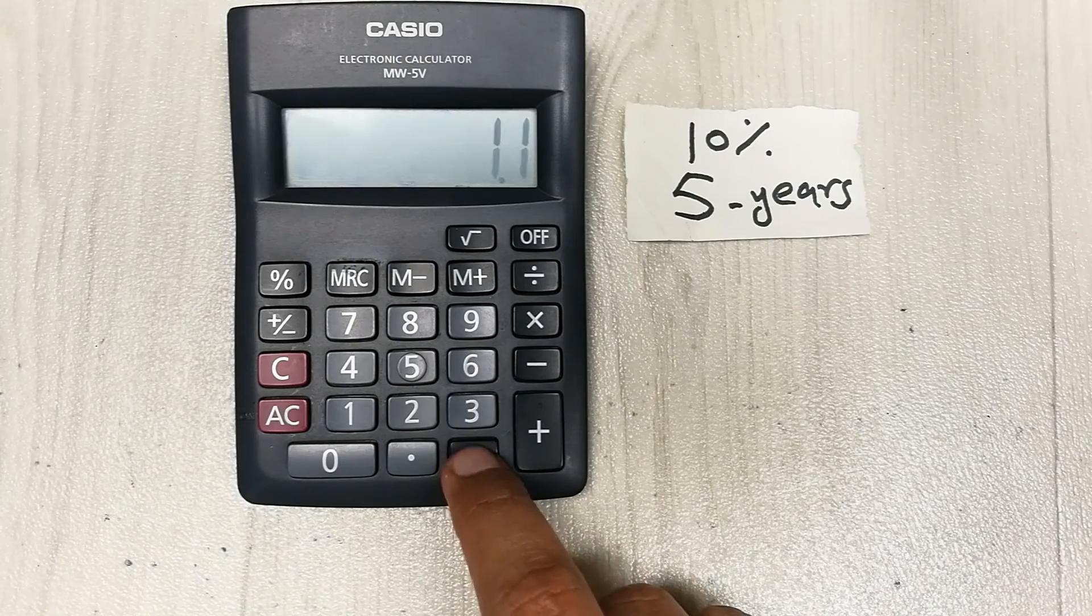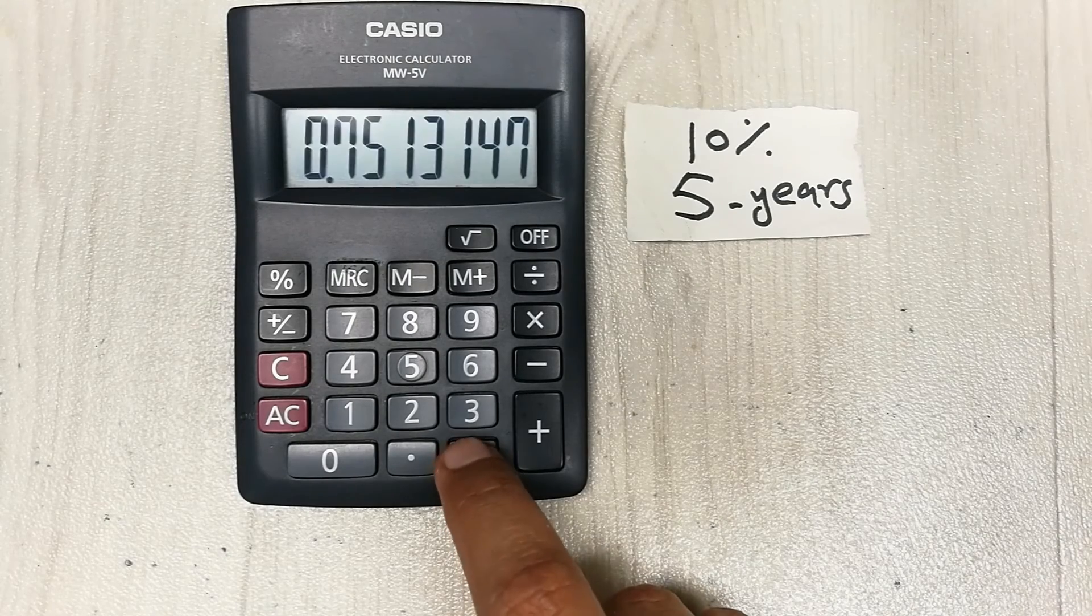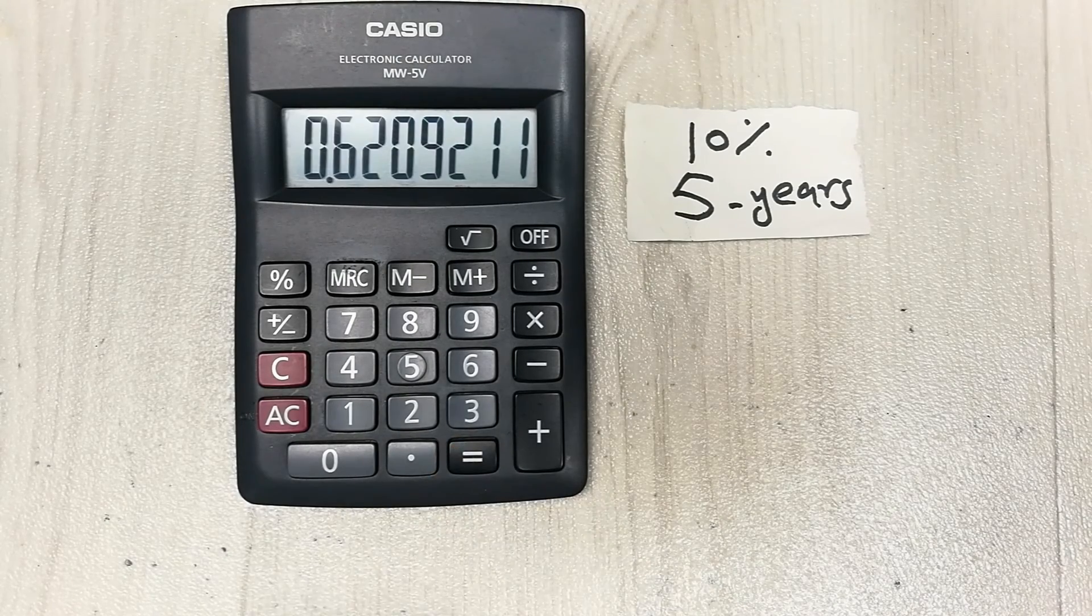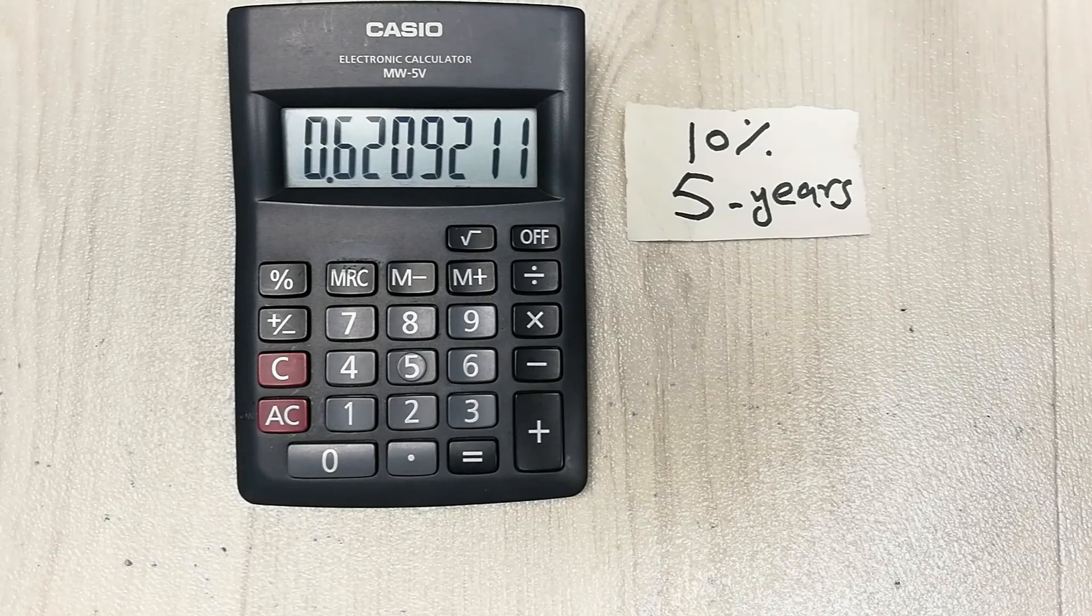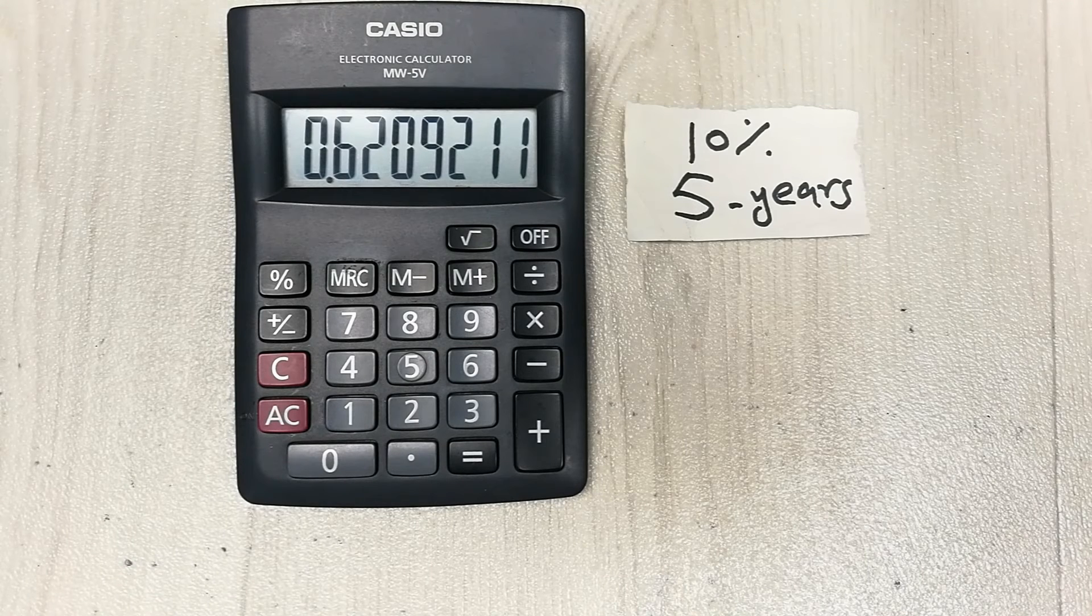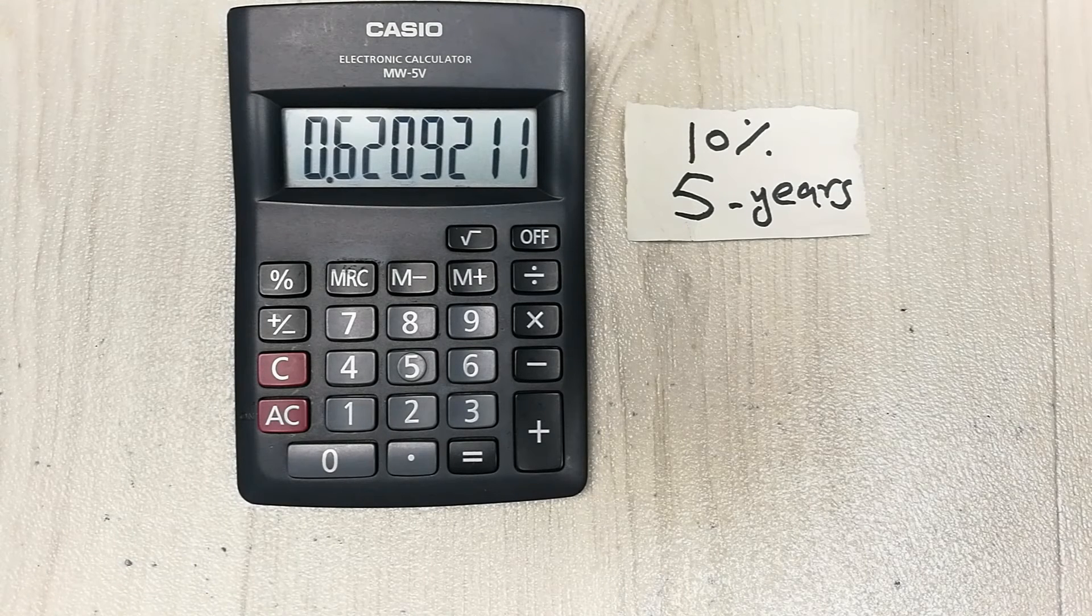1, 2, 3, 4, 5. Here is our final answer: 0.6209 is our PVIF if we do it on our simple calculator.